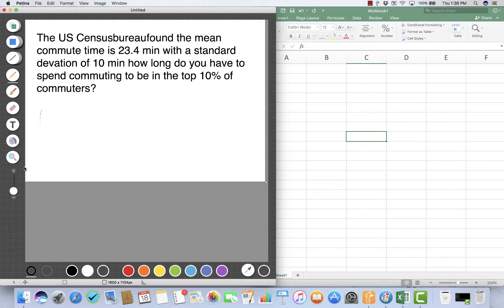First, let's consider what this is showing us. The top 10% are driving longer than most people, meaning they're in the upper tail of the normal distribution. Recall that Excel only deals with the lower tail. The opposite of being in the upper 10% means that 90% are below you, or you're commuting longer than 90% of the population. This is the value we're going to use with Excel.